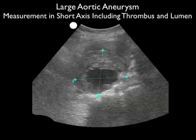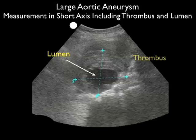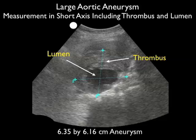Next we measure this AAA, placing calipers anteriorly, posteriorly, and laterally to include the lumen and thrombus in our measurements. We come up with a measurement of 6.3 by 6.16 centimeters, again meeting the definition of a AAA.